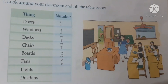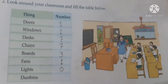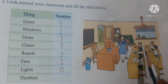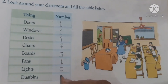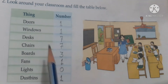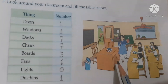Next — fans. How many fans are in the classroom? There is only one fan in the classroom, so write 1. Next — lights. Look around the class. No light is there, so we will write zero. Number of lights: zero. Number of dustbins: how many dustbins are there in the class? There is only one dustbin in the class.